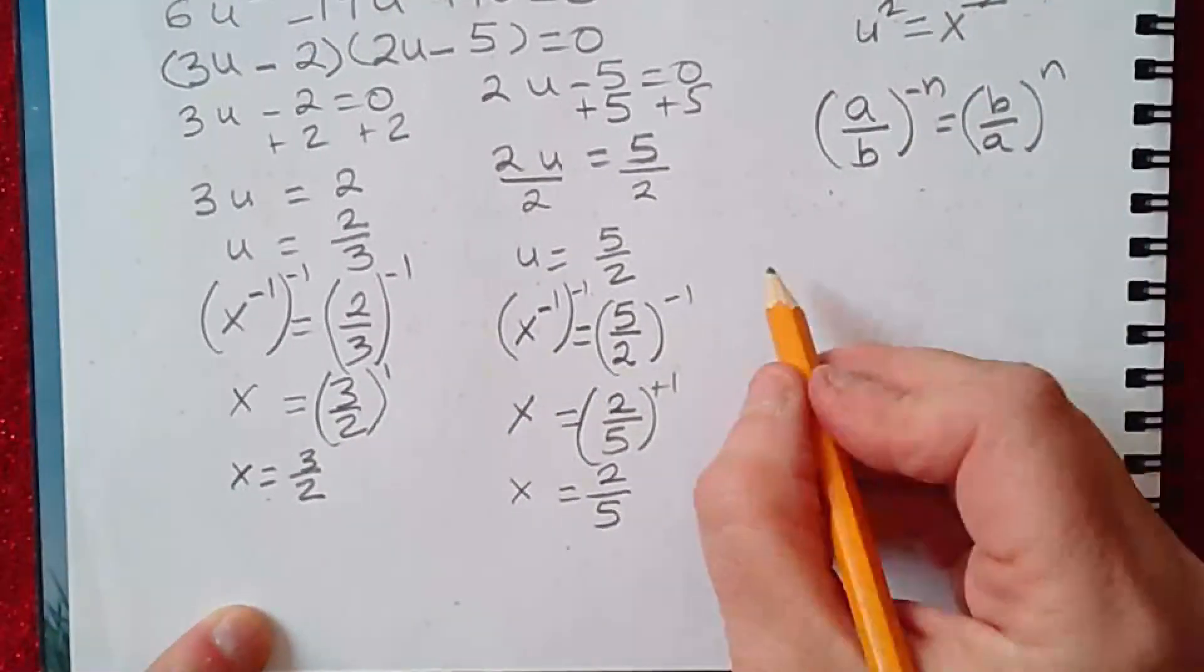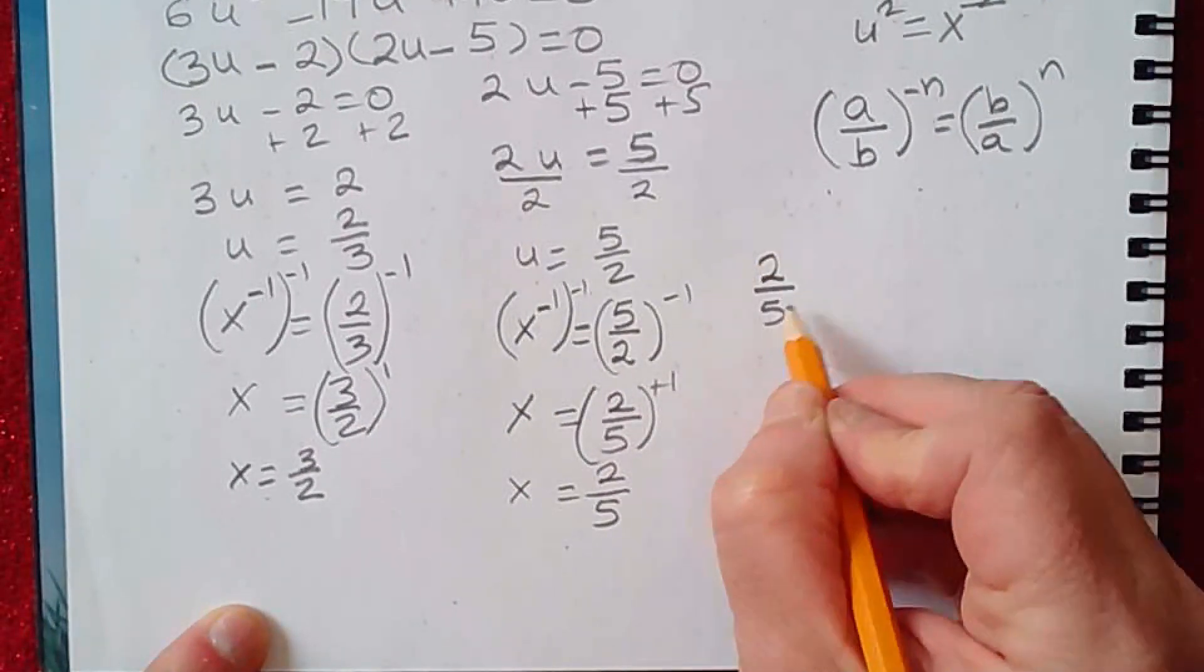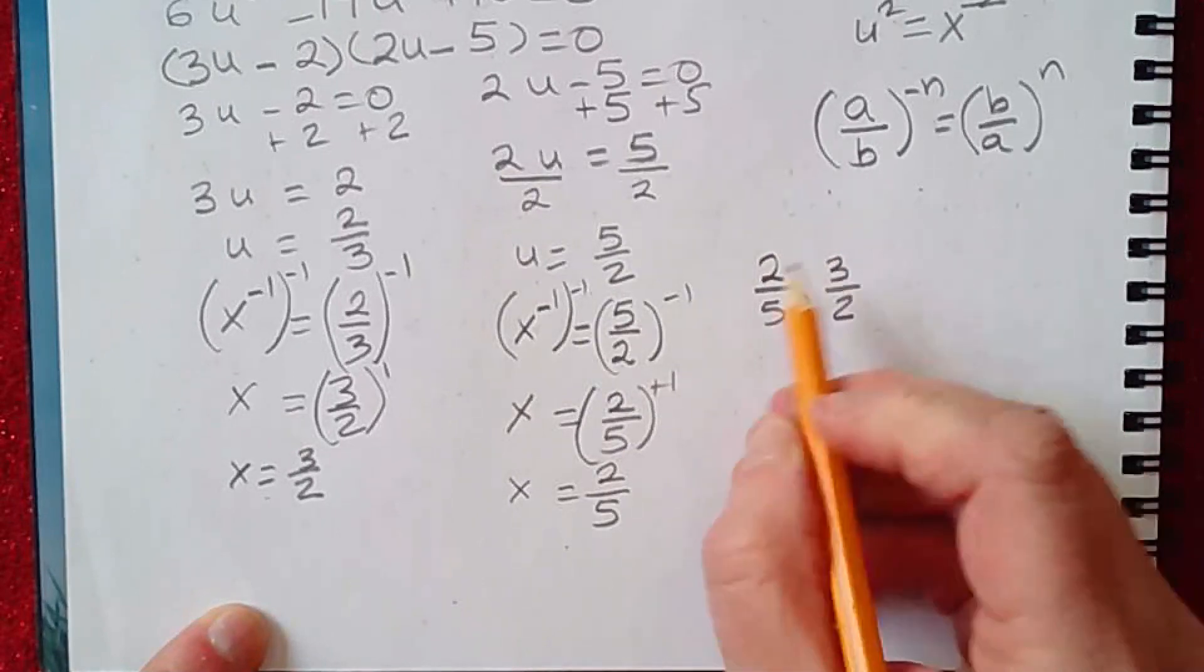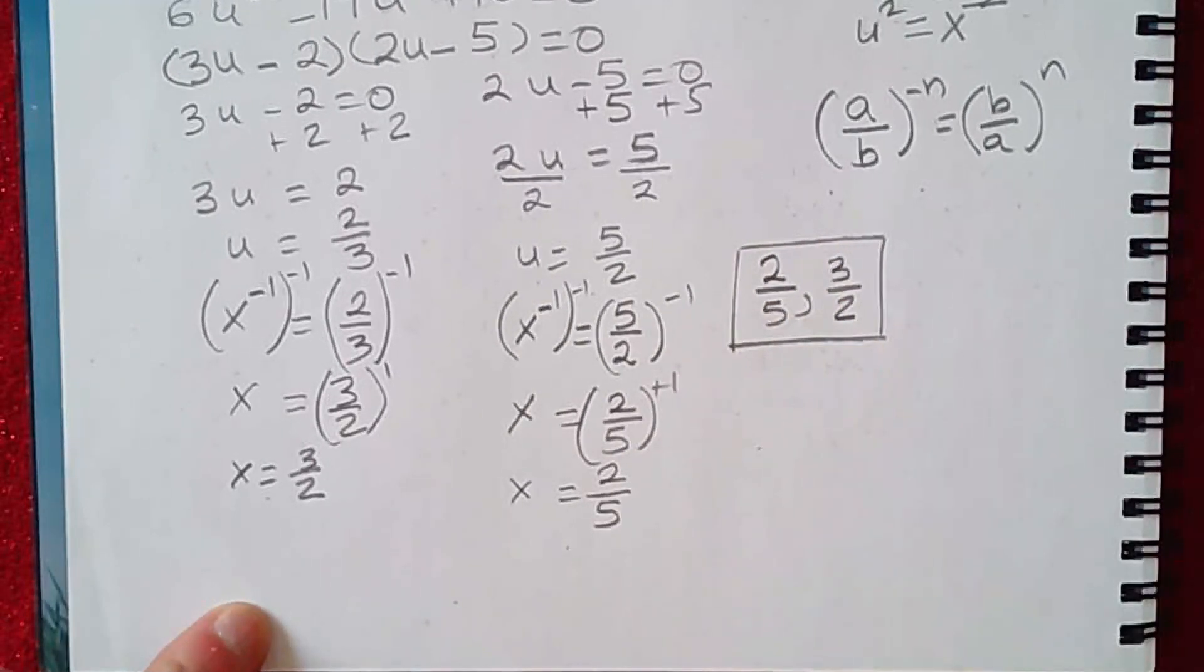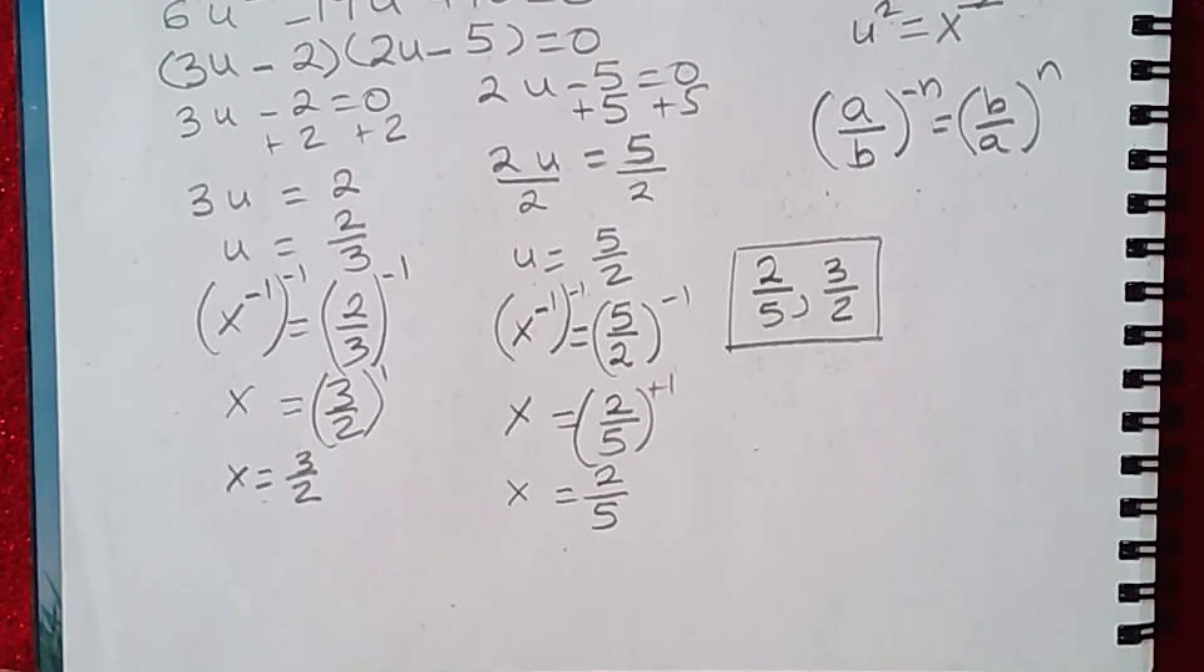So what are the solutions? 2/5 and 3/2. You need to write your solutions. Your solution must be separated with a comma.